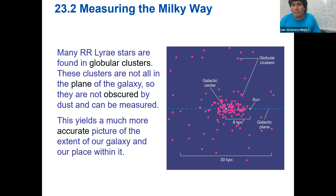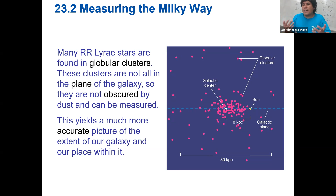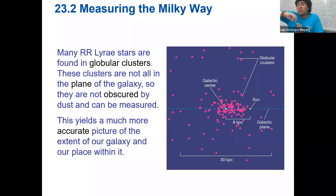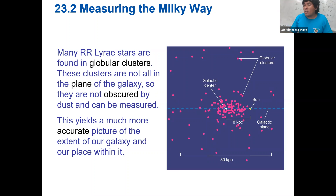Clusters of Lyra stars can be found not in the plane — and the advantage of that is if they were in the plane, they would be obscured by the dust and the galactic center. One problem when studying Sagittarius A*, the black hole of the galactic center, is not just the dust between us and the galactic center, but the galactic center itself is a very busy, chaotic environment of old stars, supernova remnants, and other features. But if you look at Lyra stars in globular clusters it's easier to measure distances and get a more accurate picture of the Milky Way.